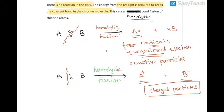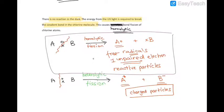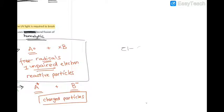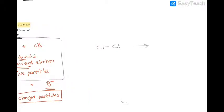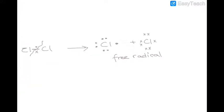So there are two types of bond fission: homolytic and heterolytic. In substitution reactions, homolytic bond fission takes place. The halogen bond — for example, the Cl–Cl bond — breaks so that each chlorine gets one electron from the shared pair. These are radicals, called free radicals. Drawing all the electrons in the outermost shell, chlorine has seven electrons in the outermost shell, making it a free radical. This happens only in the presence of UV light, which provides the energy to break that bond.